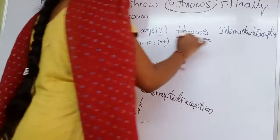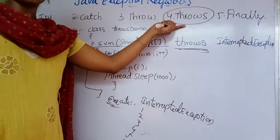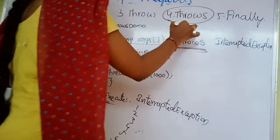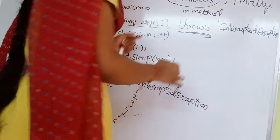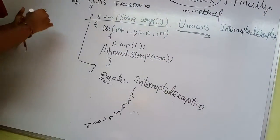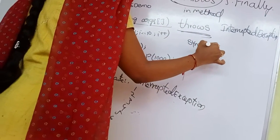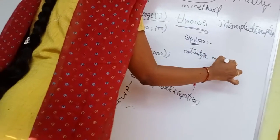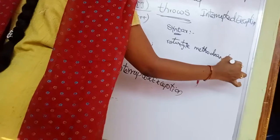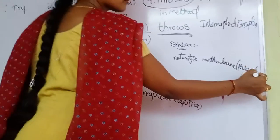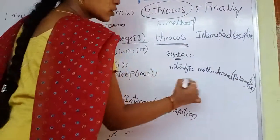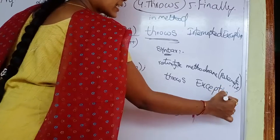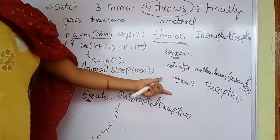When a method has an exception, we throw it using the throws keyword. By using this throws keyword we can throw the exception in the method. The syntax for throws keyword is: access modifier, return type, method name, parameter list, then throws keyword, and then the exception name. Whatever exception should be declared, that exception name should be written there. This is the syntax for the throws keyword.